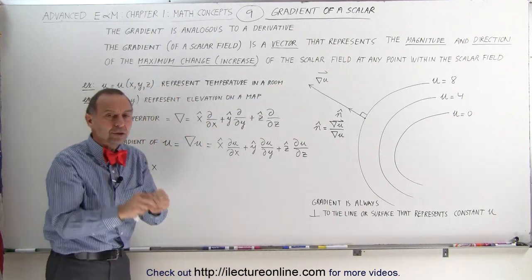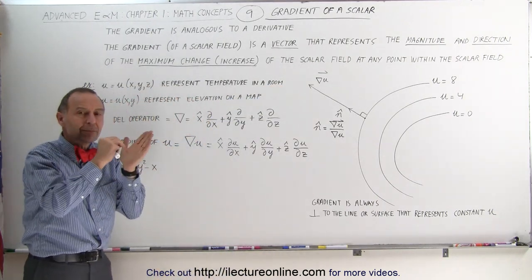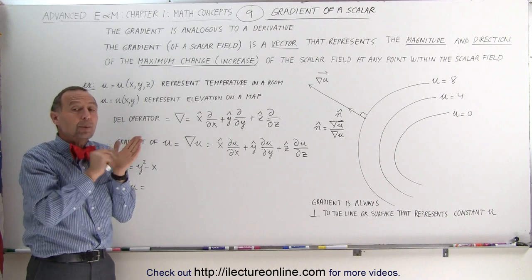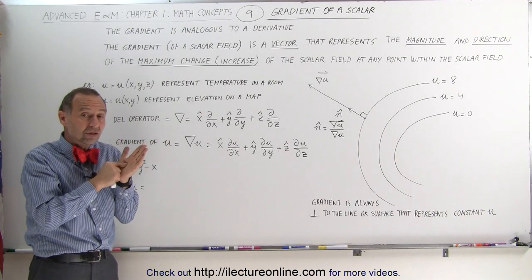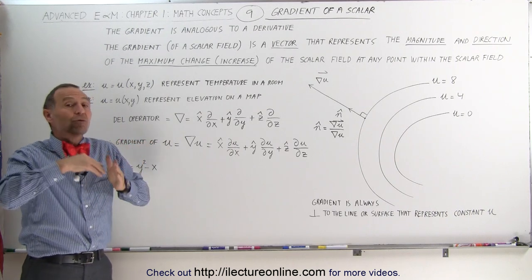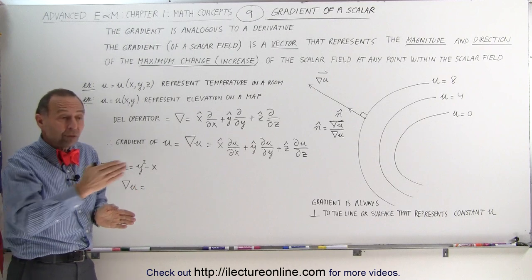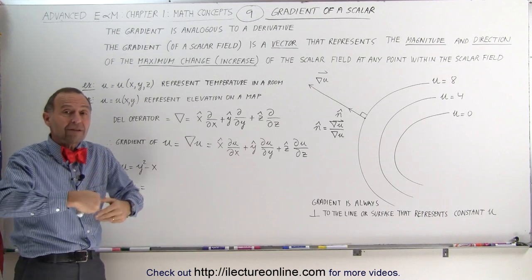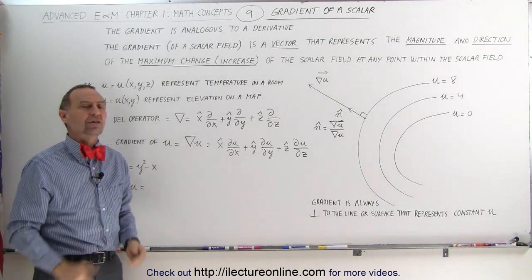So we're looking for a particular place in the field, and we want to know what the maximum change is and the direction of that maximum change. What direction should I go to have a maximum change in that scalar field?